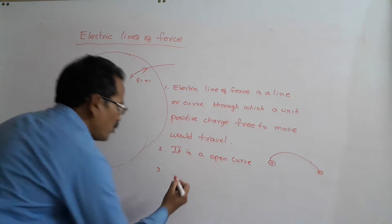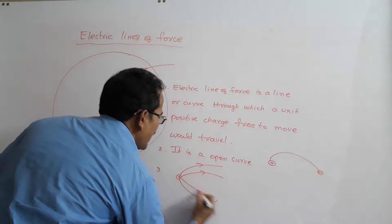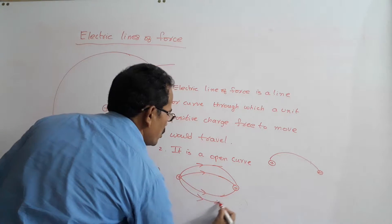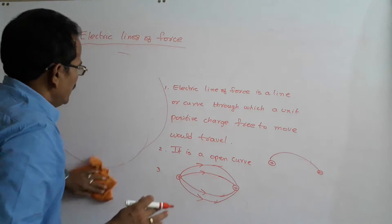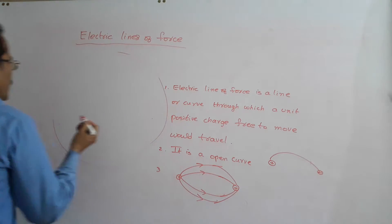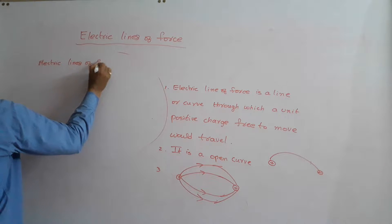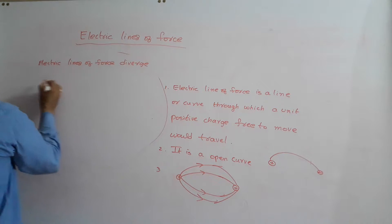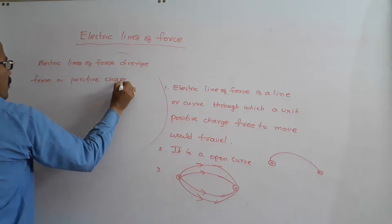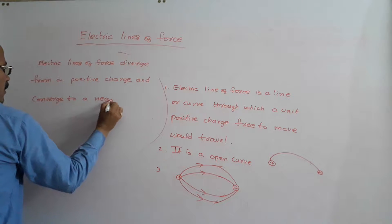These electric lines of force diverge from a positive charge and converge to a negative charge. That is our third point. They diverge from a positive charge and converge to a negative charge.